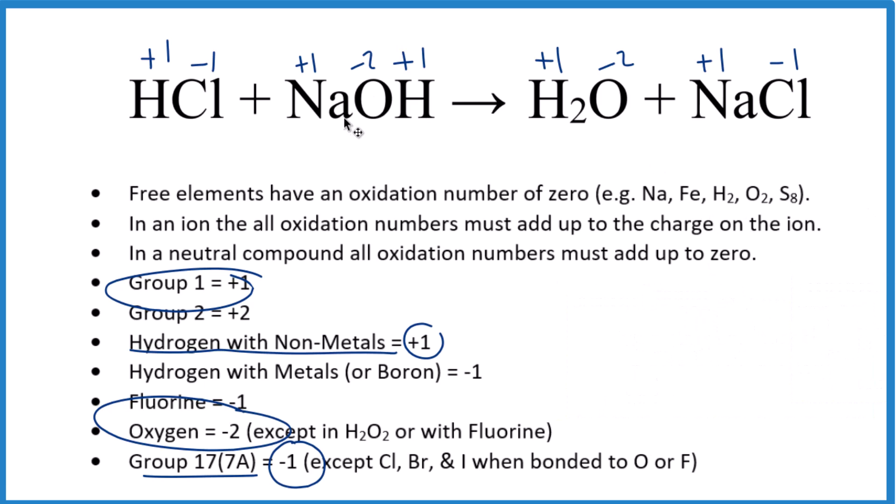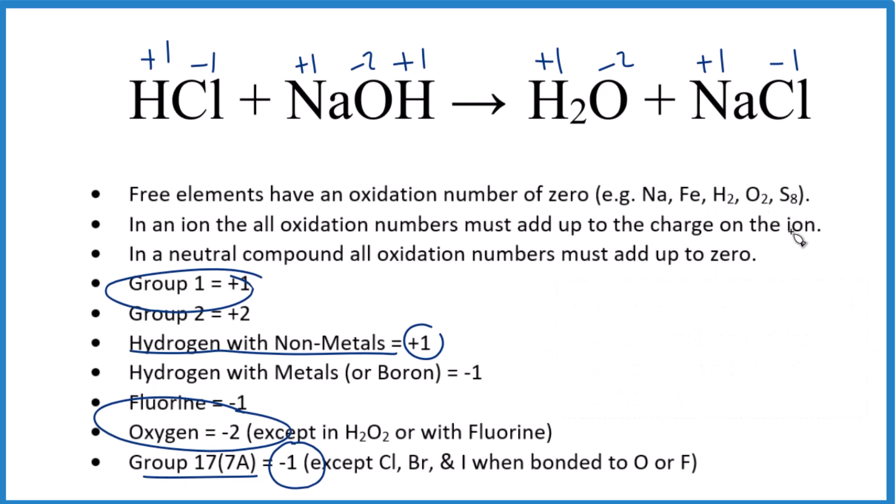So let's see whether these numbers have changed. To figure out if we have a redox reaction here with HCl plus NaOH, we need to figure out if the oxidation numbers changed. If you look at hydrogen, hydrogen's plus 1, plus 1, plus 1, doesn't change. Chlorine, negative 1, negative 1.